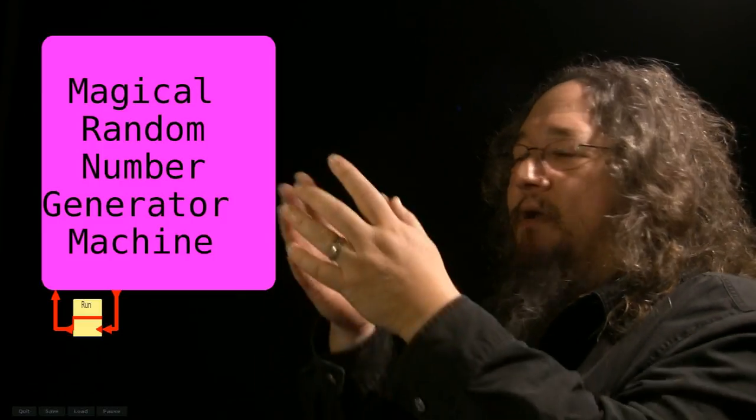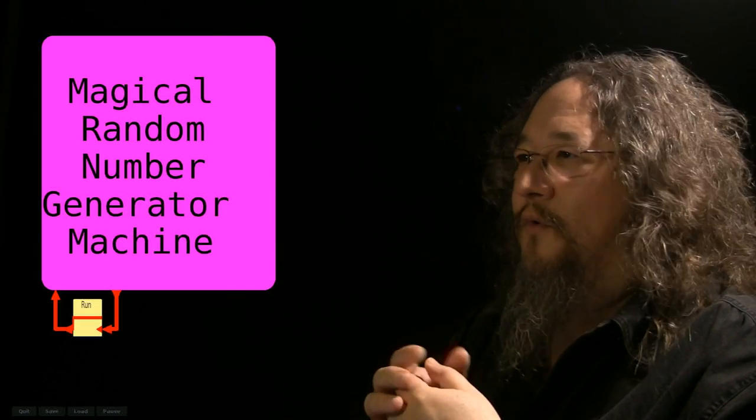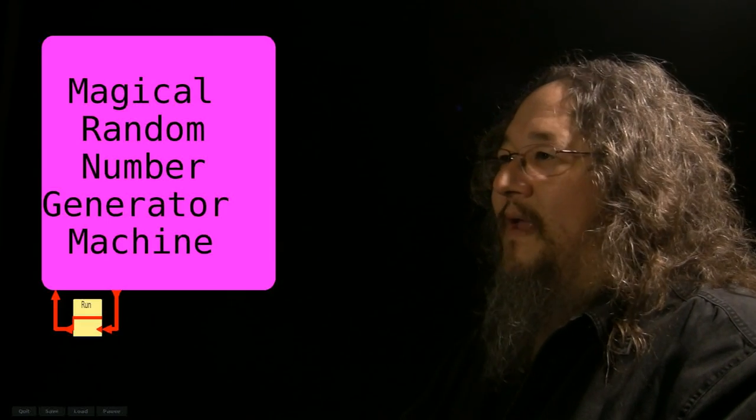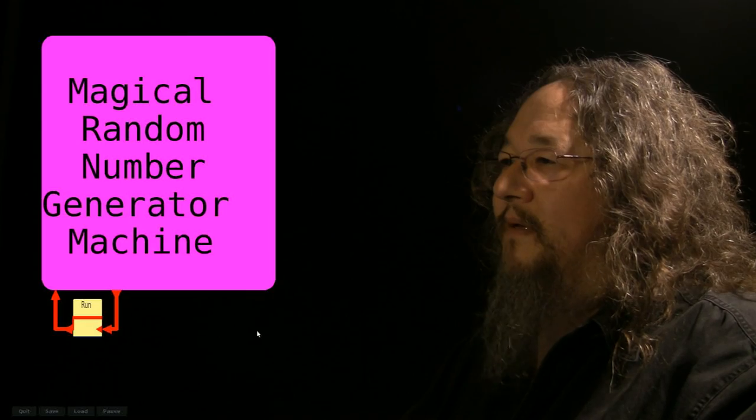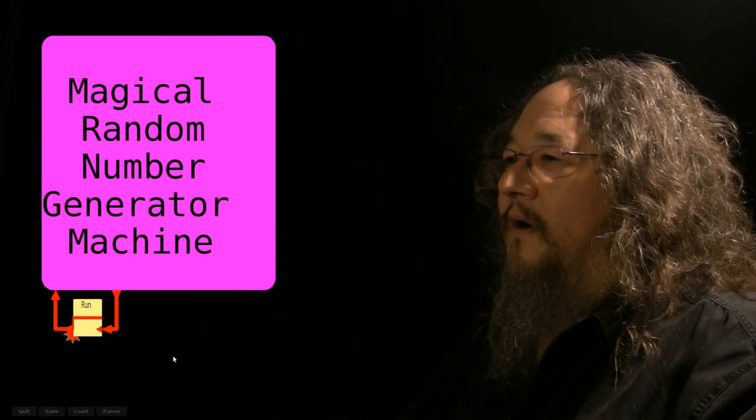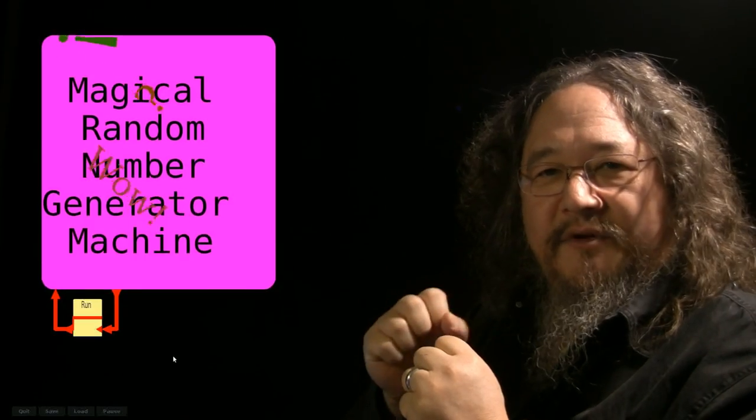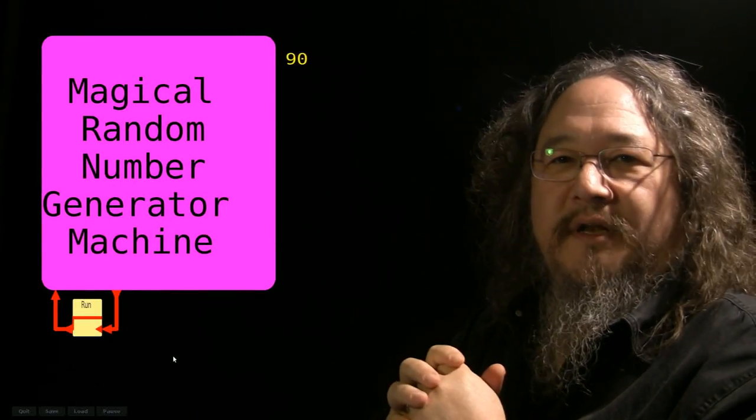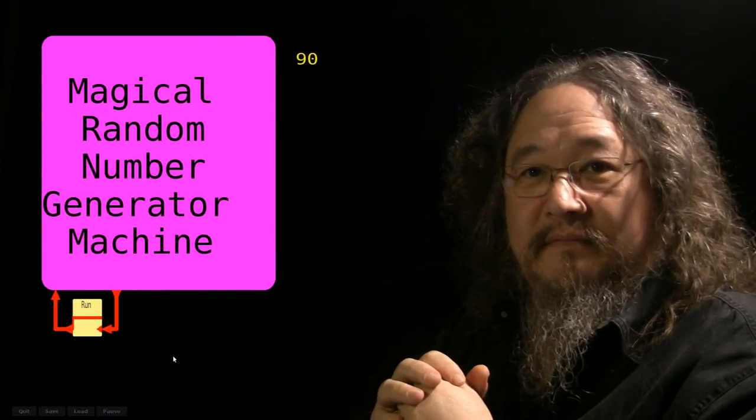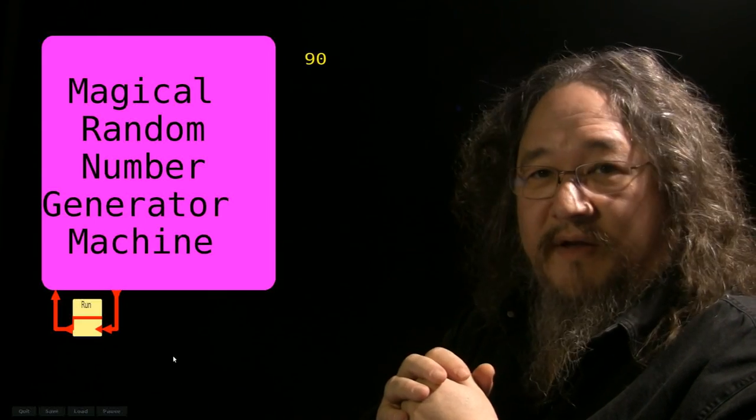Here's a machine I submit to you. It's an amazing, magical, random number generator machine. We've got a button down here that we can... So we feed in the spark of execution, and the machine cranks it. There. It produced a number. 90. Is it a random number? Well, it says it's a random number. Let's make another one.